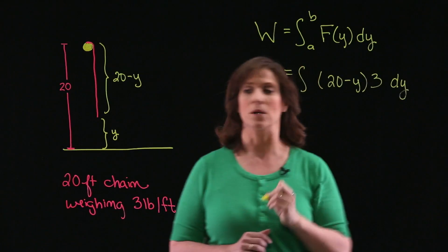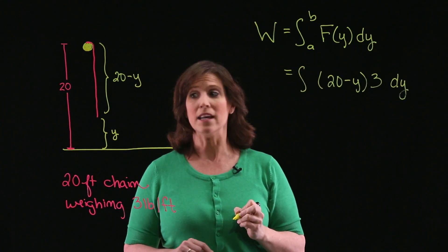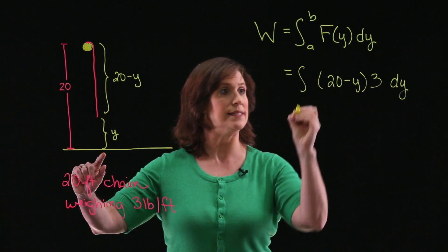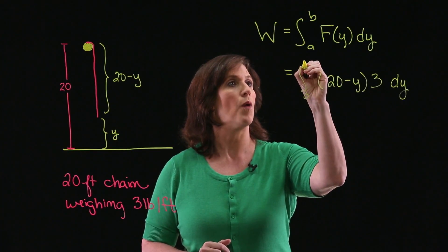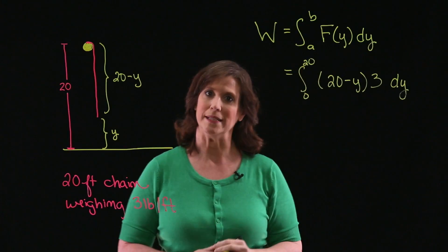The distance is represented with dy, and I'm going to be integrating from the time y is 0 until the chain is completely wound up, which means that y is going to equal 20.